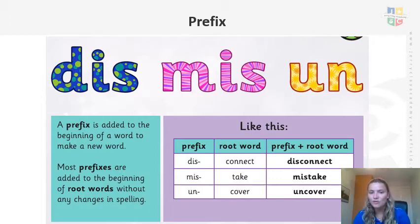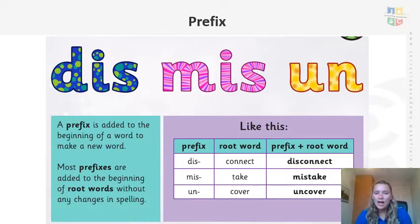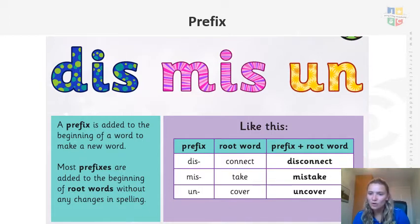Let's have a look at the next one. So we've got the root word take and the prefix mis. If you take something, you might pick something up or understand something, and if we mistake — so if we put the root word with the prefix together — we can see that if you mistake something it is the opposite of taking; you don't understand something and you've not quite grasped what's been said.